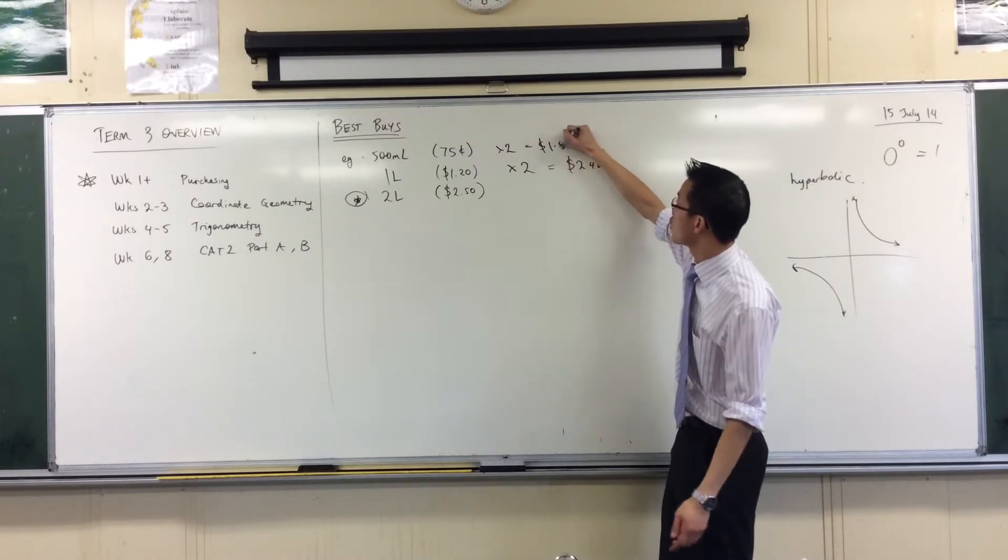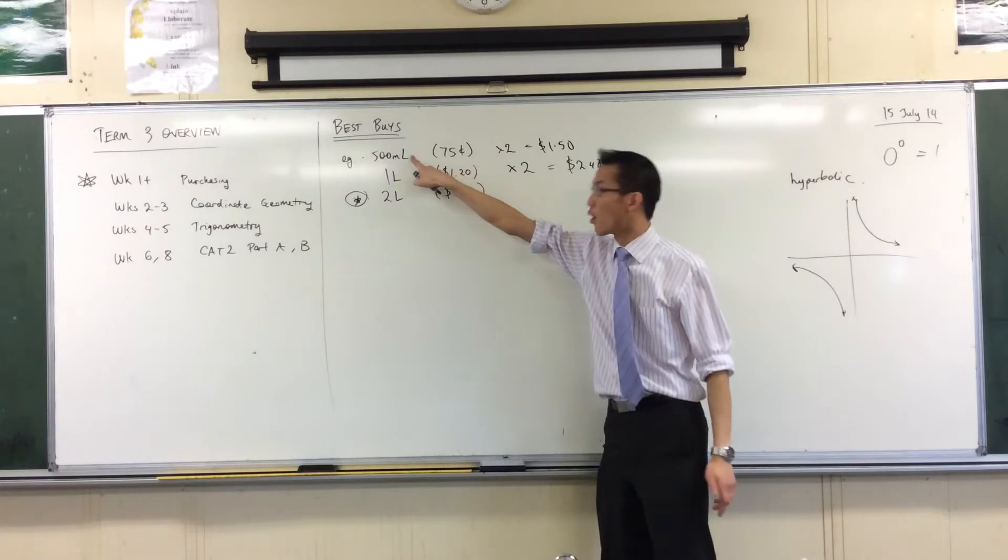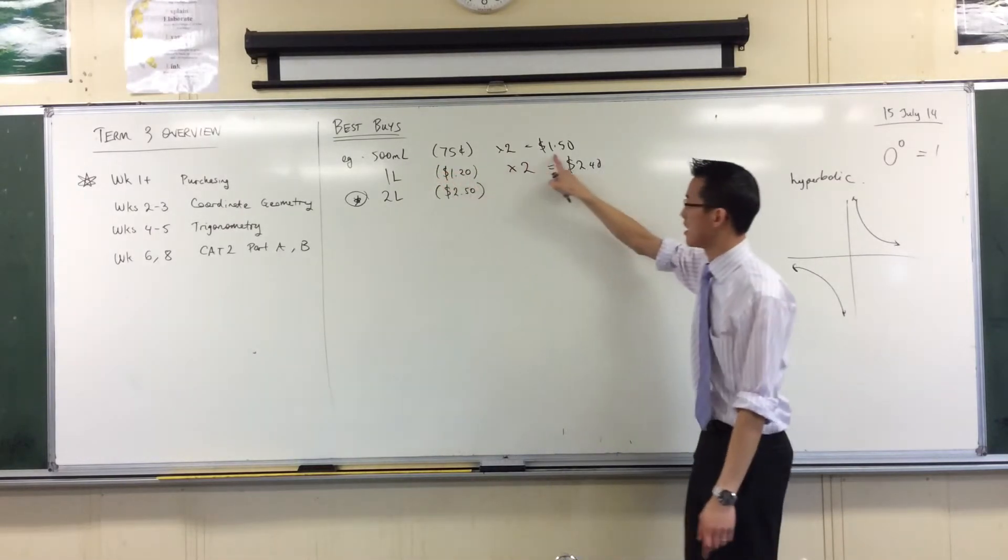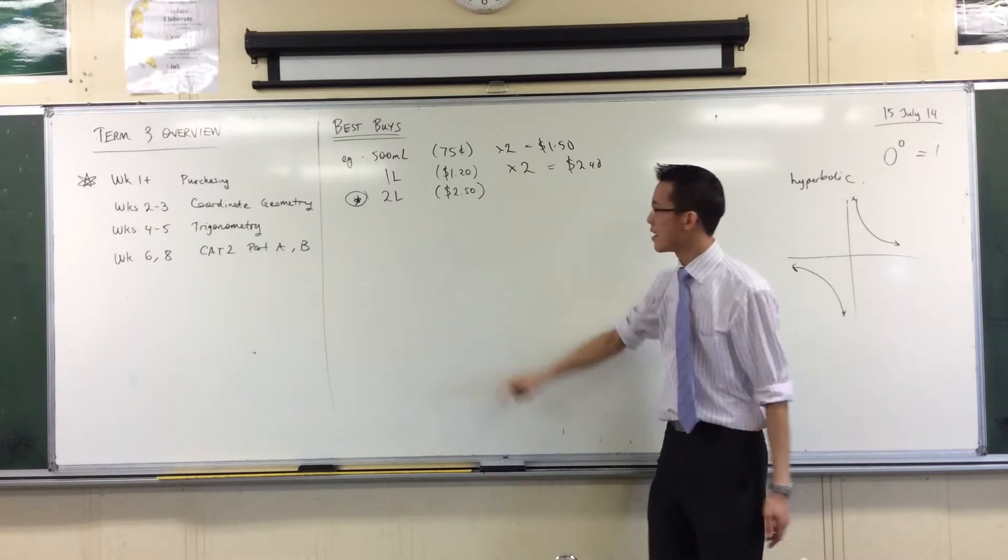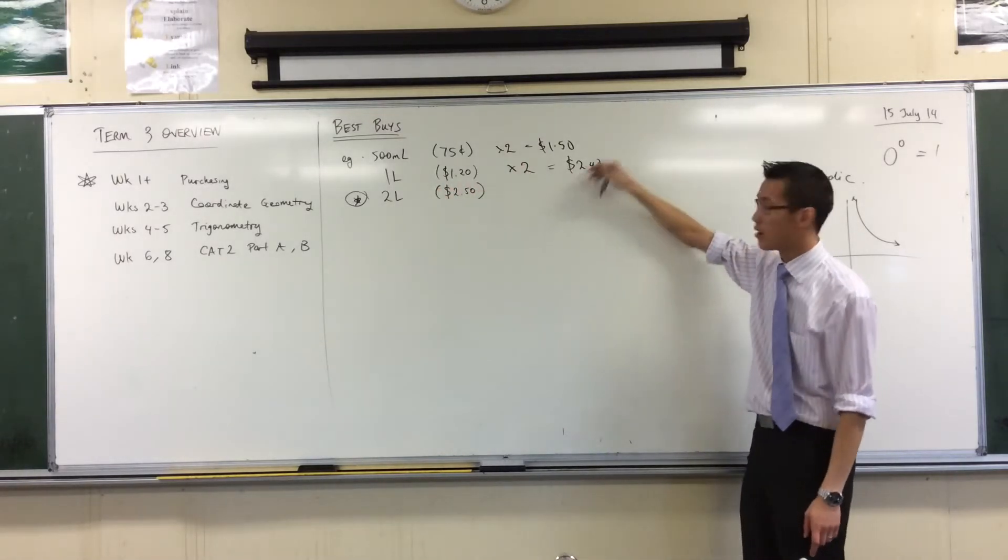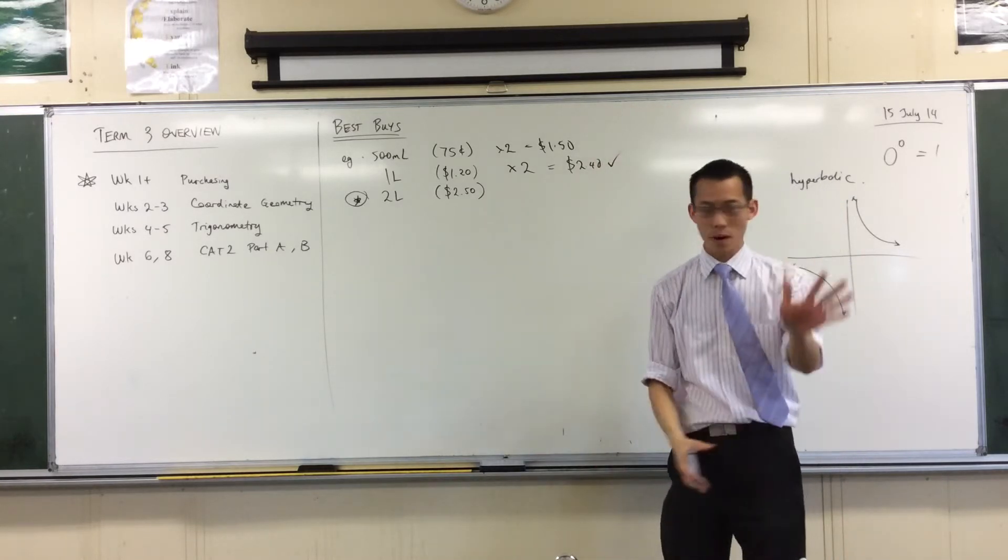So two of these is a dollar fifty. Here's the way it works: two of these bottles are equivalent in capacity to this, but it's more expensive—bad deal. Two of these in capacity equal to this and they're cheaper. Does that make sense?